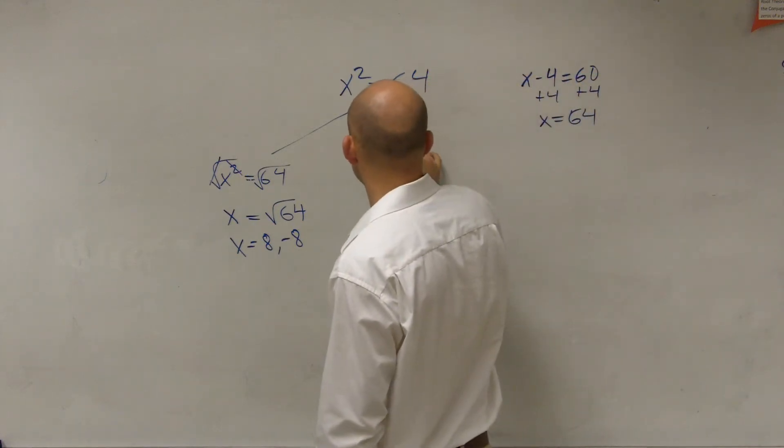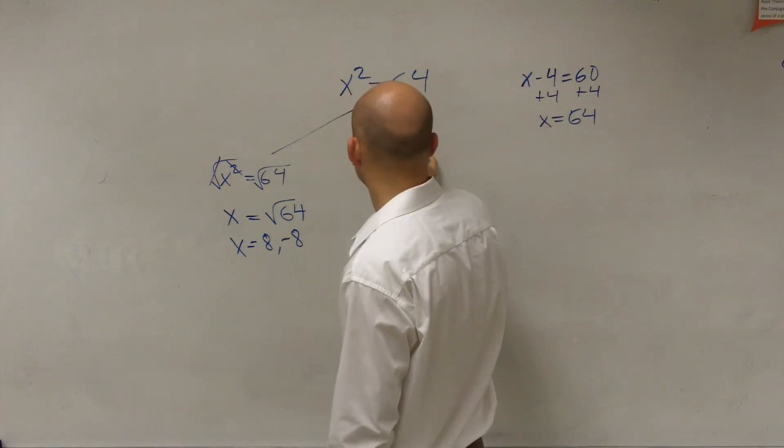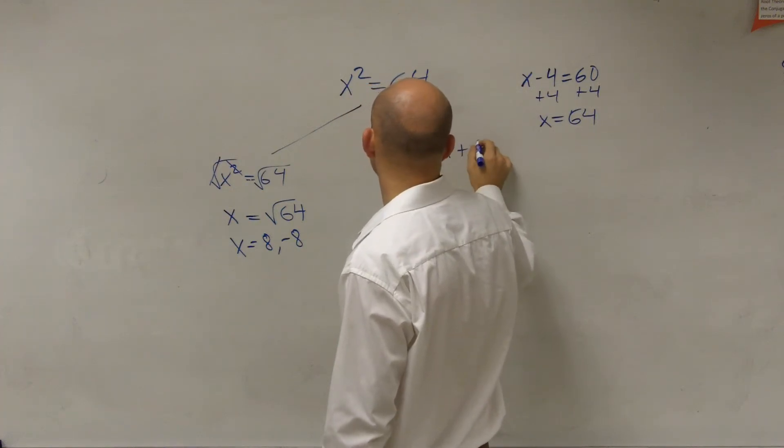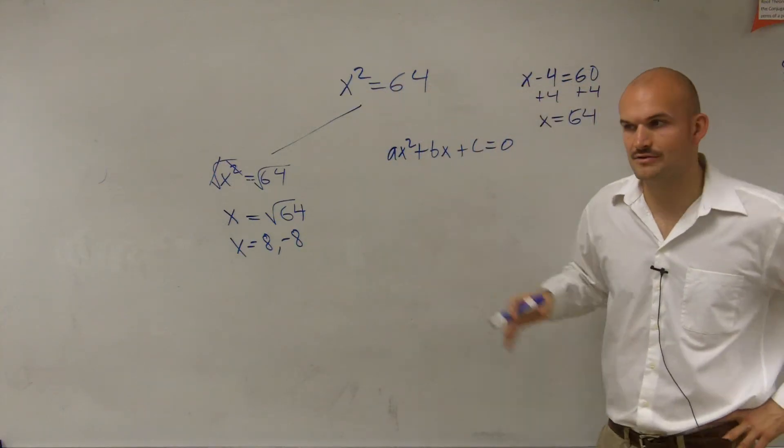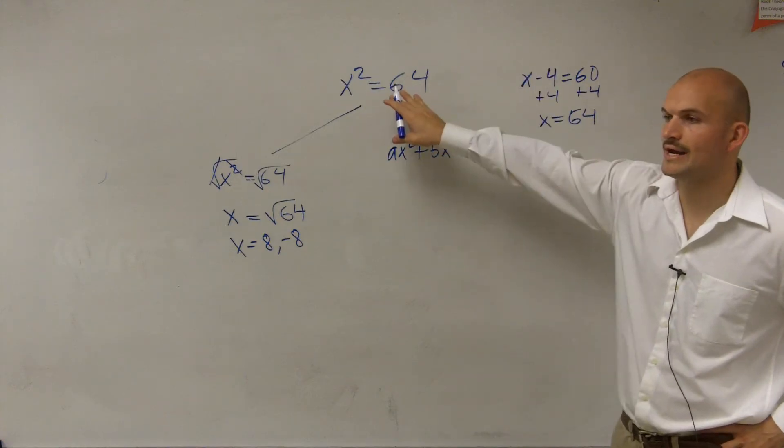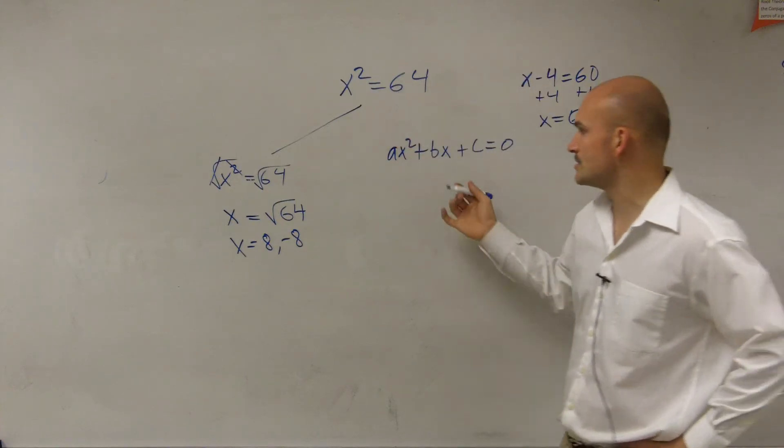That means we want to have it as a quadratic of ax squared plus bx plus c equals 0, right? We said this was a quadratic equation. We can factor these by trinomials. So how can I rewrite this as a quadratic equation?